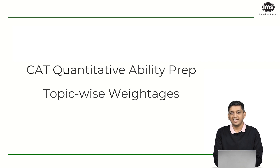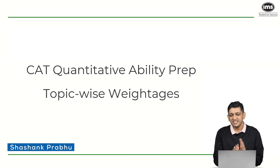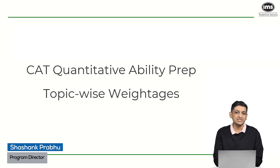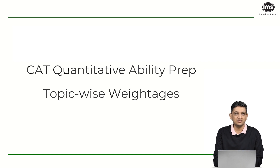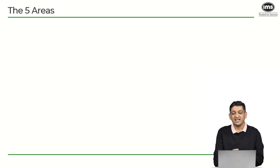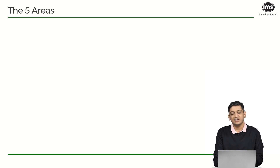Hi, if you have started preparing for the CAT and are scared of the quantitative ability section, or in general you want to know what exactly happens when it comes to the quant section, then this is the video you should be watching. In this video we will be looking at the topic-wise weightages and the syllabus when it comes to the QA section, and by the end of it you should have more confidence in terms of what exactly to expect. The entire section can be divided into five broad areas.